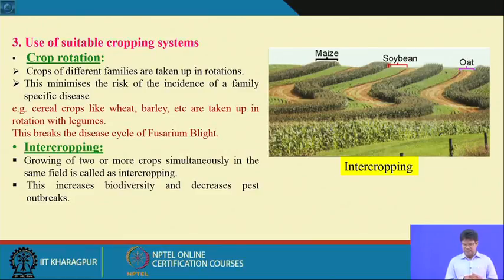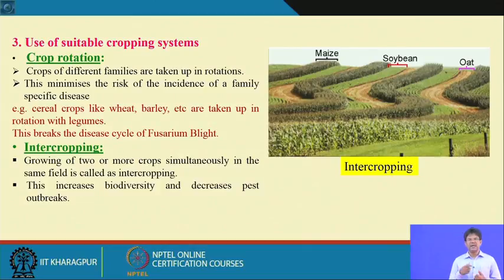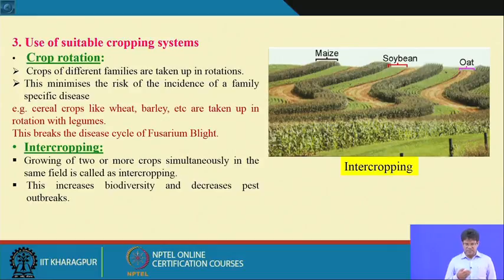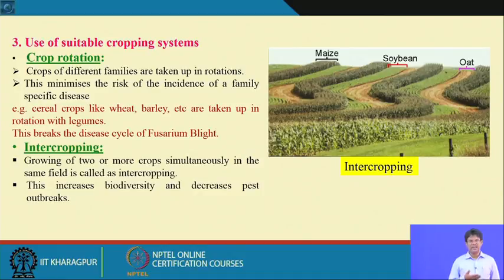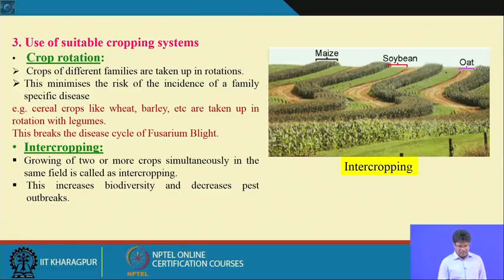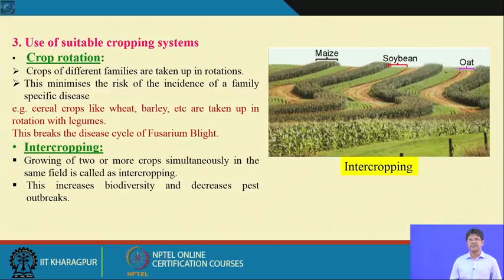Cereal crops like wheat and barley are taken in rotation with other crops like legumes, pulses, or oilseeds. In organic farming, at least one legume should be in the cropping system to build soil fertility through biological nitrogen fixation. Rotating cereals and legumes also breaks disease cycles such as Fusarium blight, eliminating diseases common to particular crop groups.